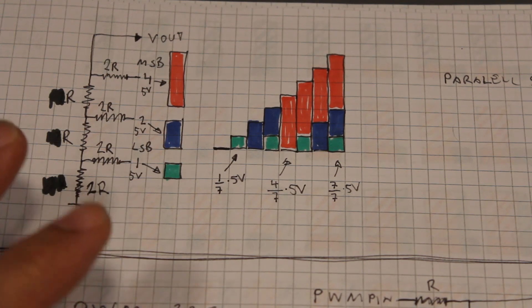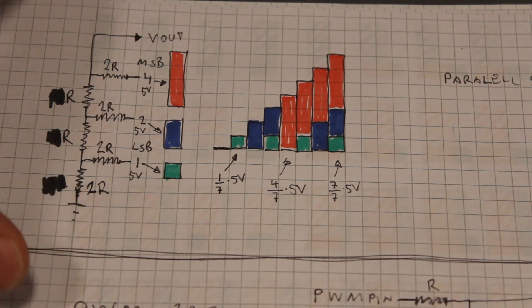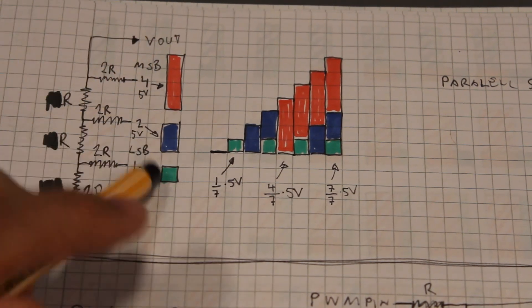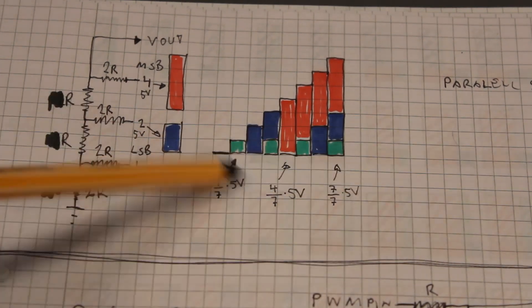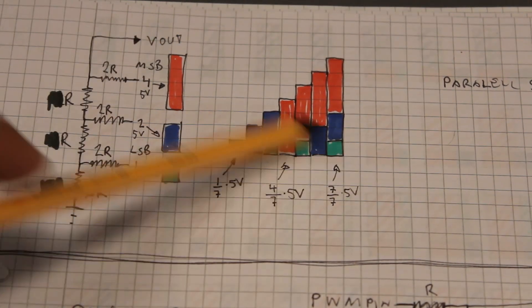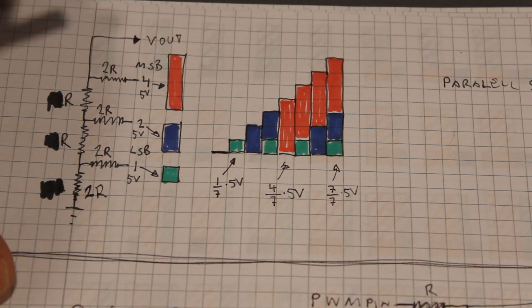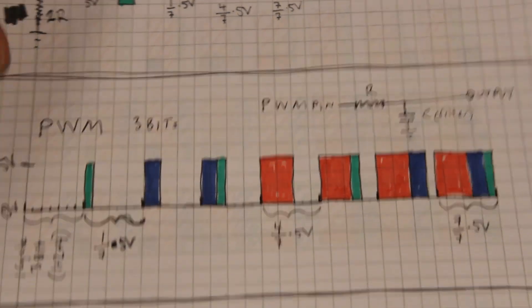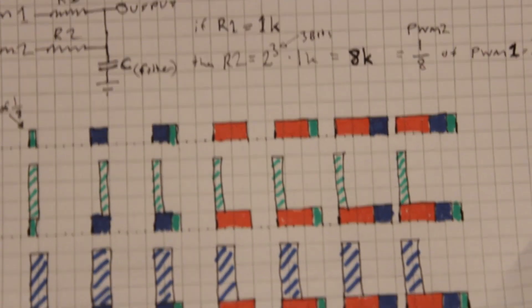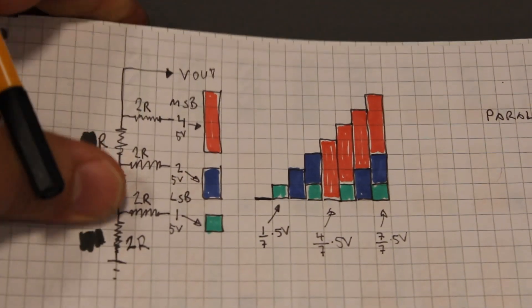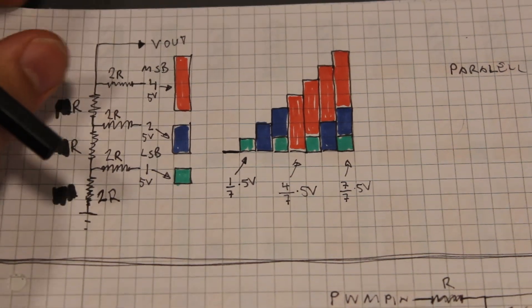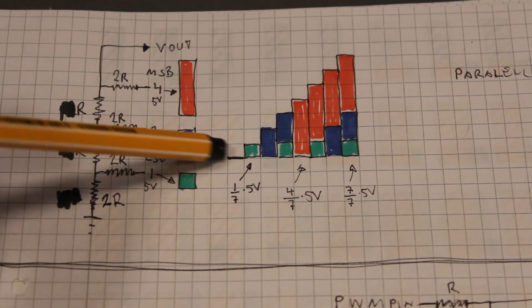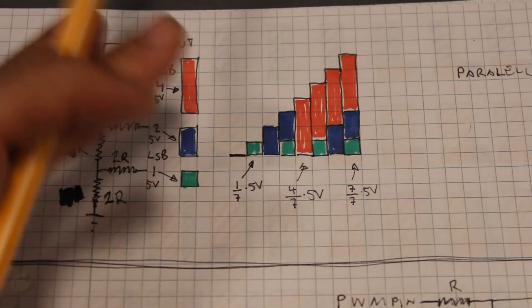To explain dual PWM I need to go back to the port manipulation parallel shift out and the R2R filter we talked about while doing the SIF module, and then we'll go through normal PWM to finally end up with dual PWM. As you can see I've been busy at work doing diagrams with color and everything.